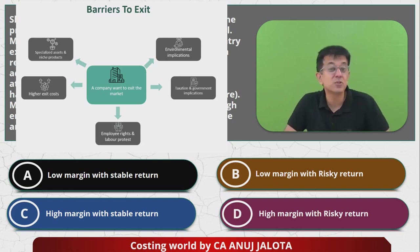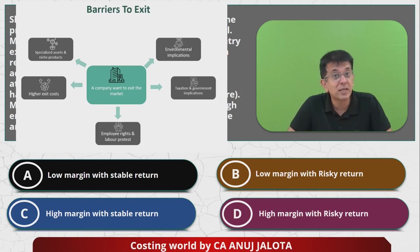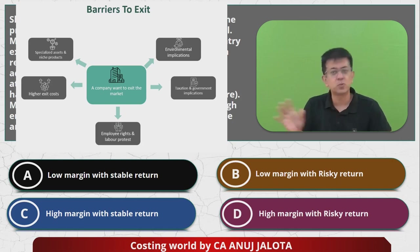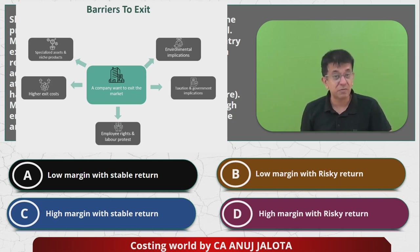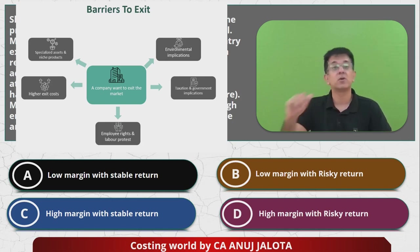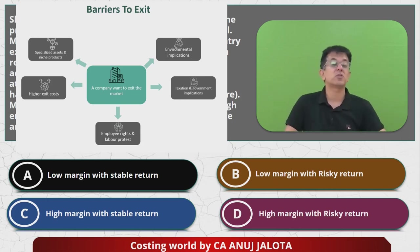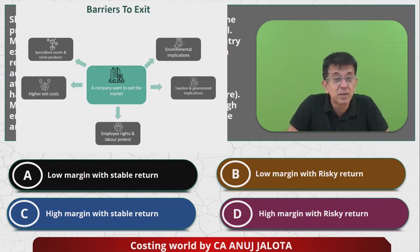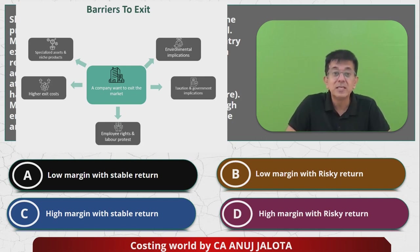Environmental implications are another exit barrier. If we decide to close our factory and dispose of everything, whatever land remains — if it is harmful to the environment, the government might tell you to clean it all up, which could cost a lot. Finally, employee rights and labor protest: employees are stakeholders who might start protesting if you close down, and you may have to pay them huge compensation. These are barriers to exit.